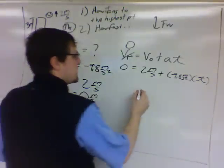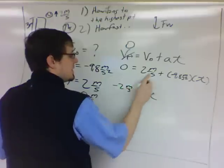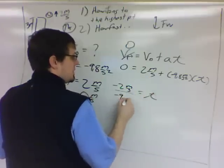And then you should be able to do the algebra from there, but we subtract 2 from both sides and then divide both sides by negative 9.8.